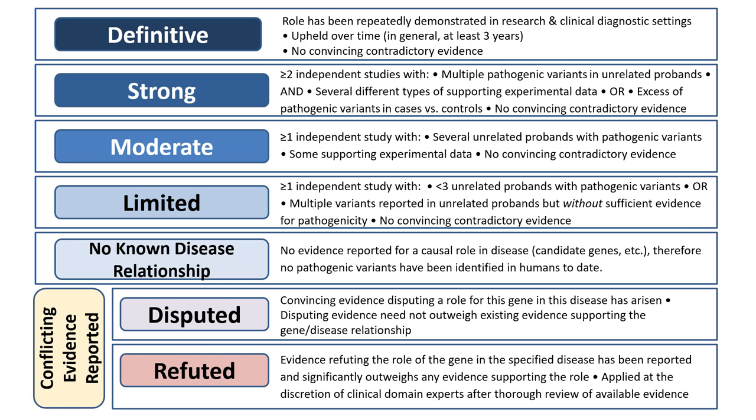The classifications shown here are used to qualitatively describe the strength of evidence documenting a gene disease relationship. These are described in our 2017 publication in the American Journal of Human Genetics and are also available on our website, clinicalgenome.org. As a reminder, these terms do not reflect the effect size or relative risk attributable to variants in a particular gene. For example, a definitive gene disease association does not imply that variation in that gene confers 100% penetrance of the phenotype.